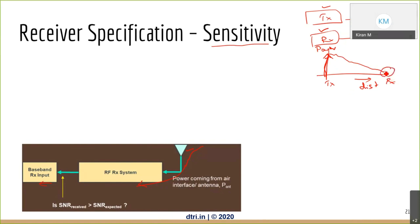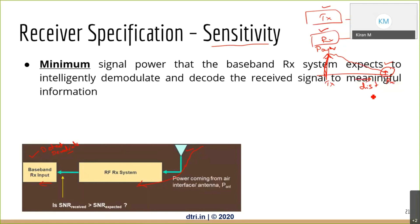Now the question is: if I give this very low power signal to the system, will I be able to detect and demodulate it in the baseband? The RX signal, because of noise and distance, comes as a very small level. If the system cannot find out what the information is, it will just say it's all noise and you will lose the information.